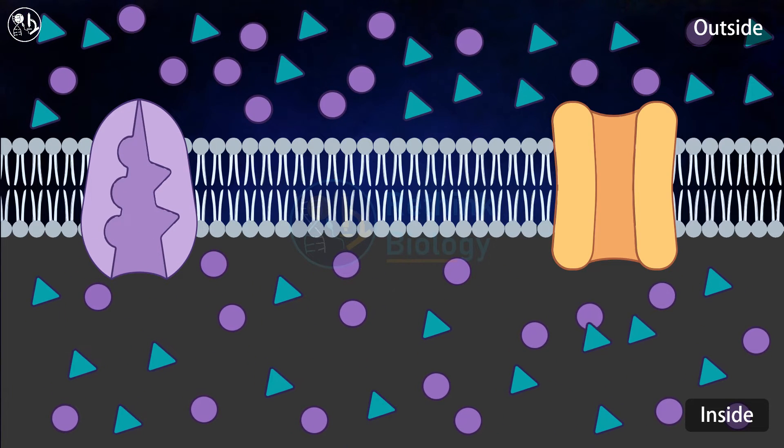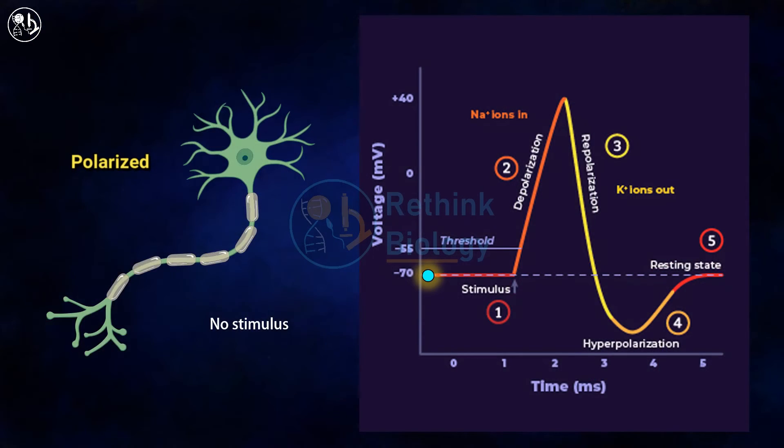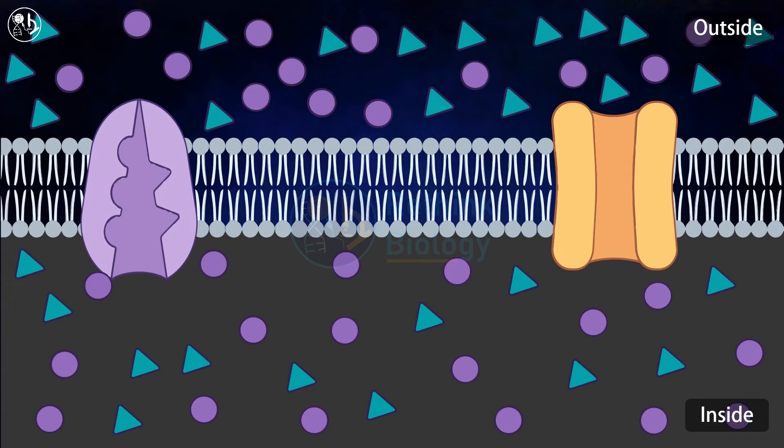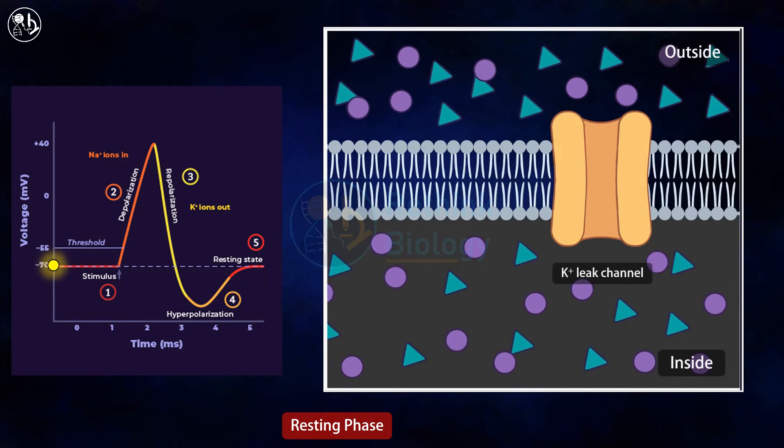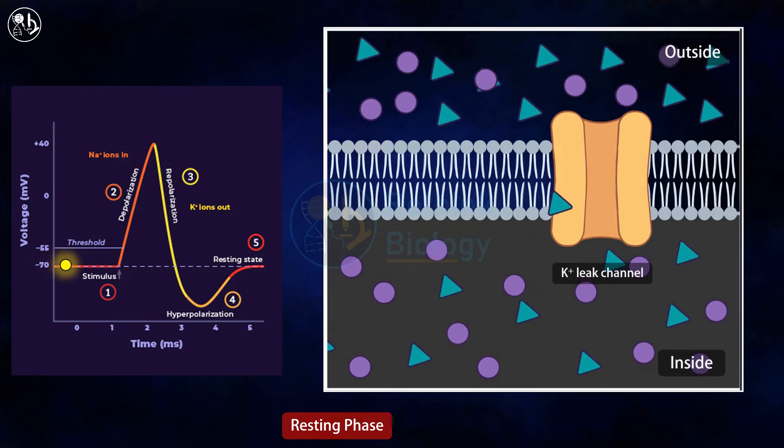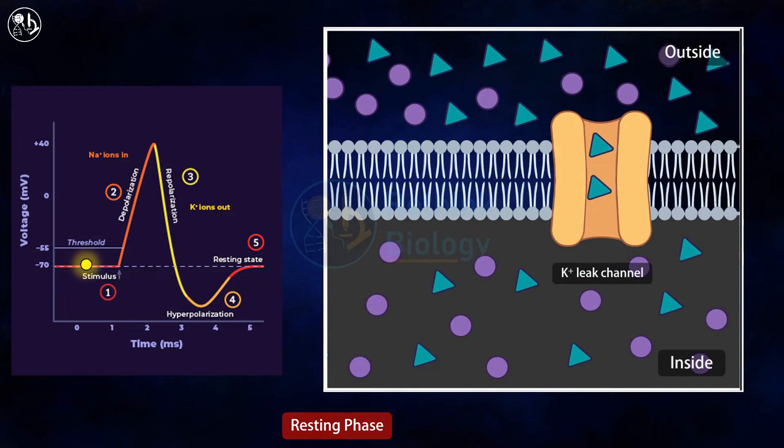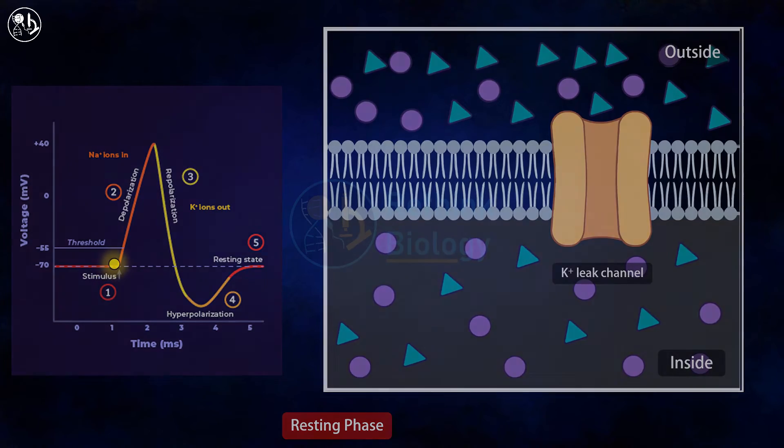A nerve cell that exhibits a resting membrane potential is said to be polarized. The successive stages of generating action potential are: the first stage is the resting phase or the polarized stage. During this stage, the sodium-potassium channels are closed. Only potassium leaky channels are open which leak potassium ions outside the cell.